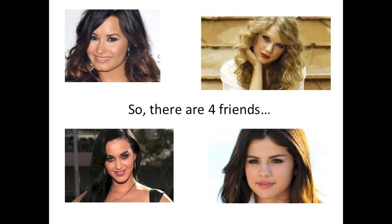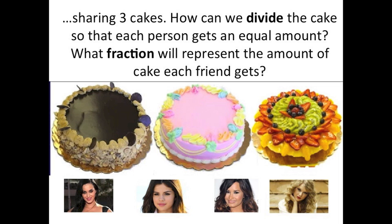So if there are four friends sharing three cakes, we need to divide the cake so that each person gets an equal amount, which means we will end up with a fraction that's going to represent the amount of cake each friend gets. By dividing the cakes, we are making fractions.